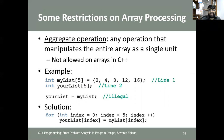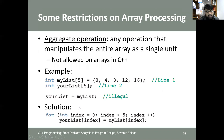There are restrictions on array processing. Aggregate operations — any operation that manipulates the entire array as a single unit — are not allowed in C++. For example, you cannot copy one array into another using a simple assignment operator. Instead, you must do it index by index using a for loop, which copies each value from one array to the other using their indices.